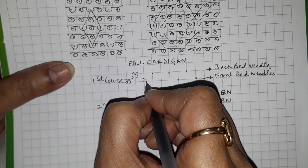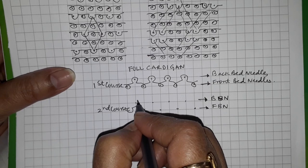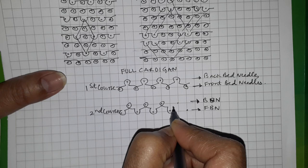This is different than a piqué structure. Now on the front bed you tuck and on the back bed you knit.